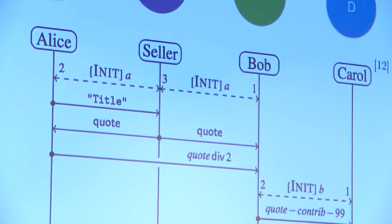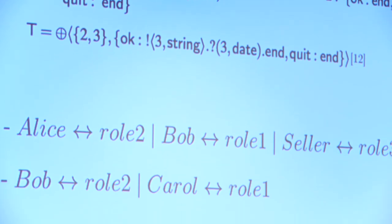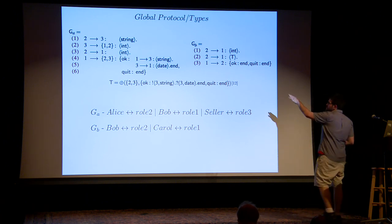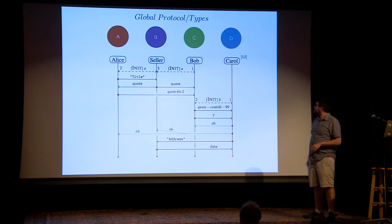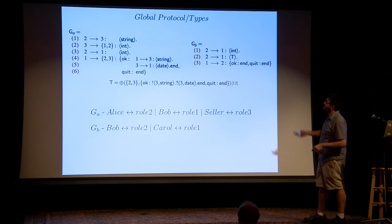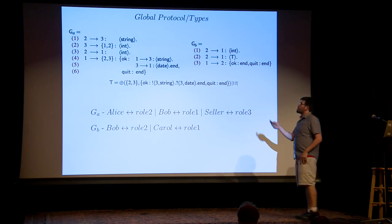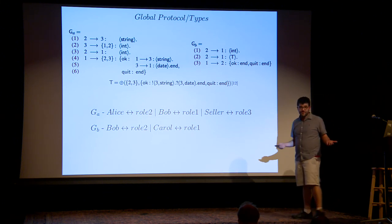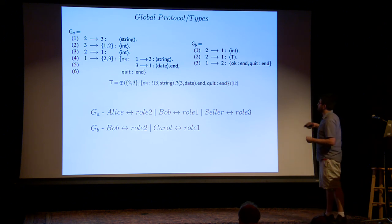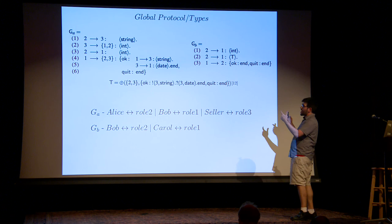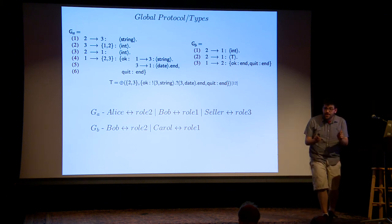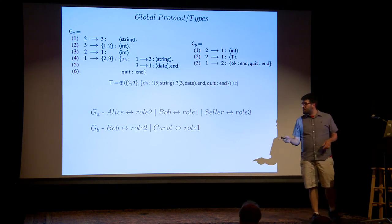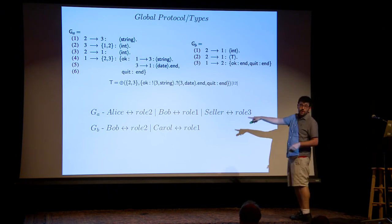With the dotted lines representing case statements — we can decide. The typing labeling shows those role numbers. Alice is role two, sending a message to role three (the seller), sending a string, going back and forth with ints. When we have the 'okay' or 'quit' statement, that's a branching statement. The clear syntax at the bottom with T-equals lets you define the syntax of the entire communication channel in one string. I have session A and session B, Alice is role two, and Bob acts as a different role in the second session.